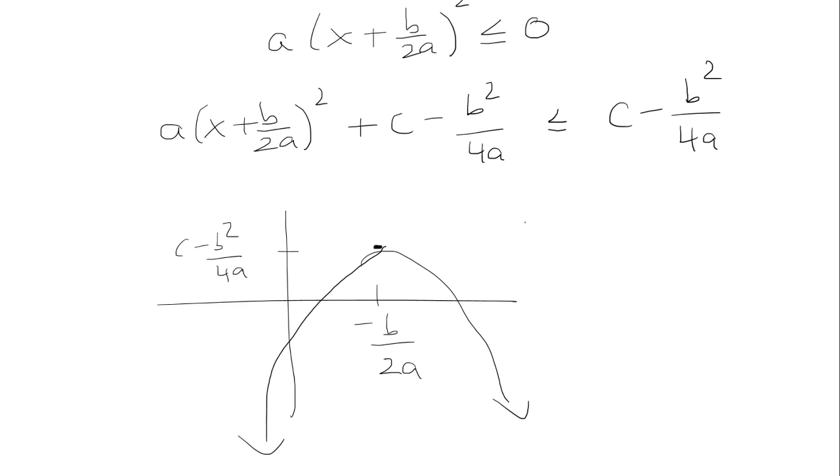So in both examples, when a was positive and a was negative, x equals opposite of b over 2a was a point of either maximum or minimum. And also notice I didn't mention a equals 0 because when a equals 0, you don't have a quadratic. And this completes the proof.